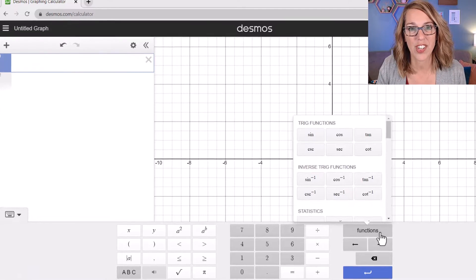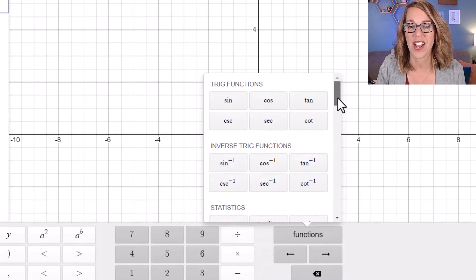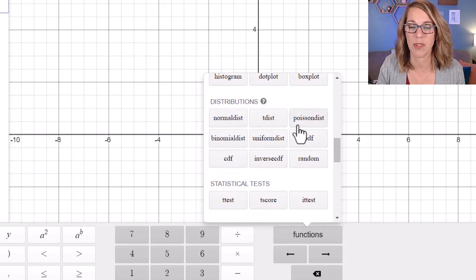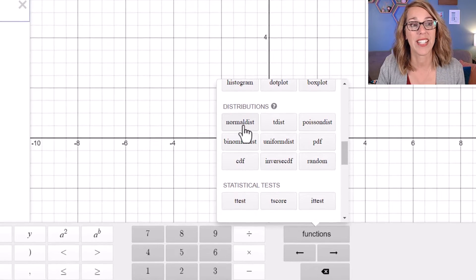You can click on the keypad in the lower left corner and you can get here either on your desktop or on your mobile phone app. I'm going to click on functions and I'm going to scroll down until I see distributions. So as I scroll down here, there's the distributions and I find normal dist.